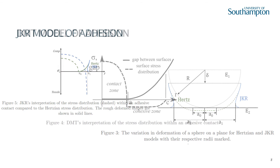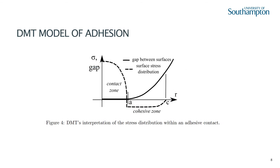The DMT model was formed as an extension to the earlier interaction potential approximation made by Derjaguin. Conversely to the JKR model, it required the bodies being considered to be small and rigid. Adhesion was only considered outside of the contact area, and this was valid for as long as the contact areas and thus deformations remained small. Because of this, the level of adhesion throughout loading remained constant.